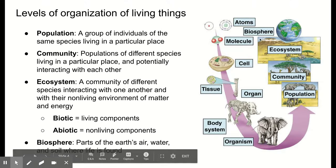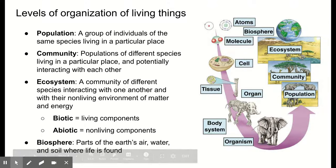Ecologists talk about five levels of organization of life. Starting with an organism — one living being, like an elephant. One level up is a population: a group of individuals of the same species living in the same space. Think about not just one elephant, but a herd of elephants — that one herd living in that particular area is our population.